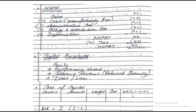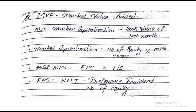The second thing we need to find is MVA (Market Value Added). The formula is: MVA = Market Capitalization minus Book Value of Net Worth. Market Capitalization = Number of Equity Shares × MPS (Market Price per Share). MPS = EPS × P/E ratio. EPS = (Net Profit After Tax minus Preference Dividend) / Number of Equity Shares.